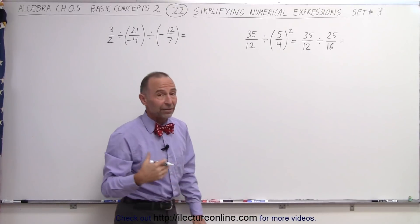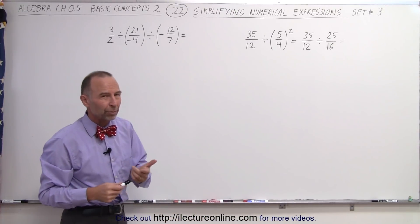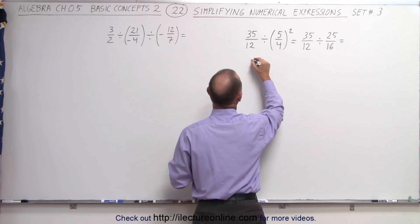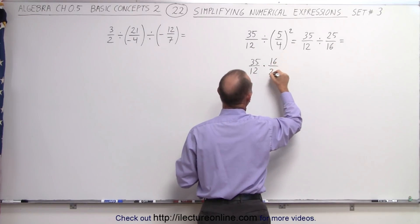All right, now we can go ahead and take care of that division. The rule tells us that if we divide with a fraction, it's the same as multiplying by its inverse. So this can now be written as 35 over 12 multiplied times the inverse of that, which is 16 over 25.